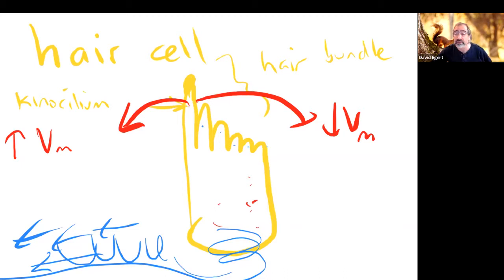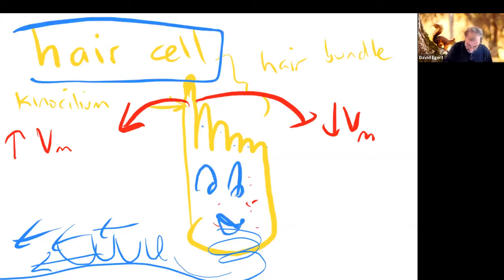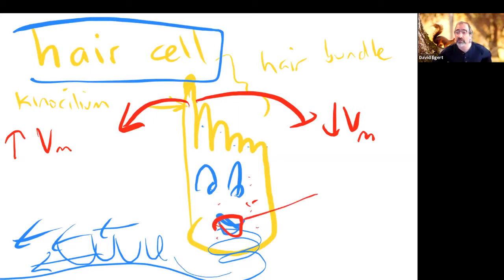As the voltage goes up and down on this hair cell, it changes the frequency of action potentials triggered going down the axon along the vestibulocochlear nerve, telling the brain about hearing and equilibrium. This little hair cell is at the core of understanding either balance or hearing.